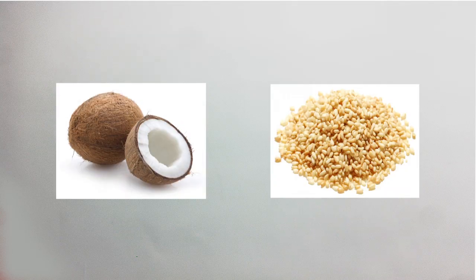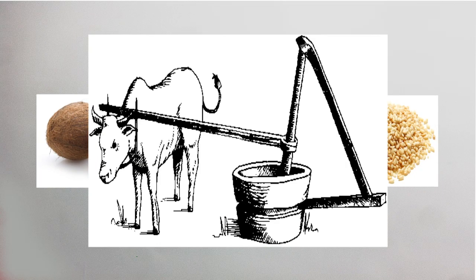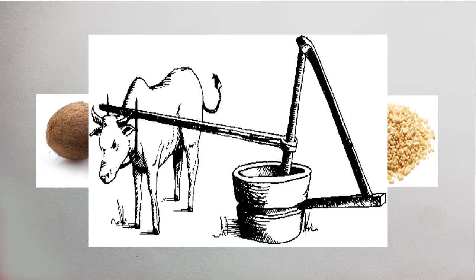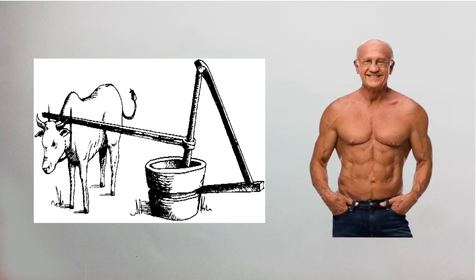In the end, cold-press is just a new name for a much older and traditional process. Our grandparents and generations before them have used the oils of coconut and sesame or til, which used to be extracted by crushing and pressing them with a big vessel known as ghani.